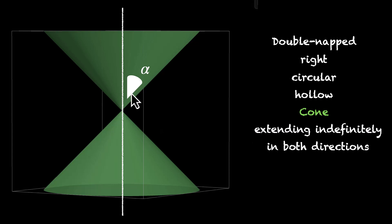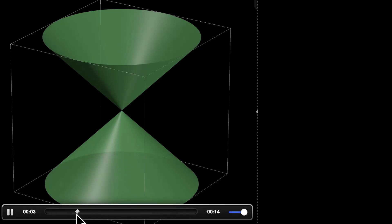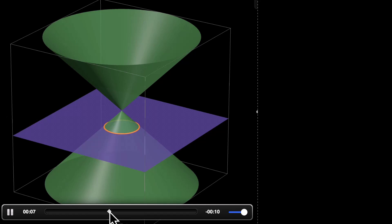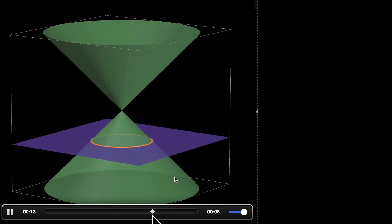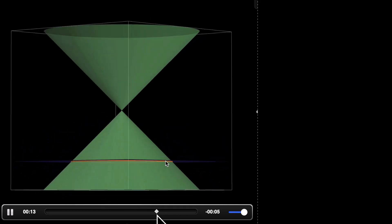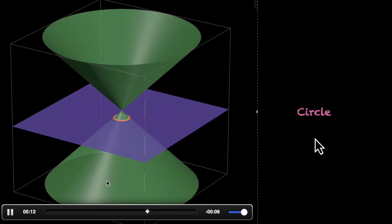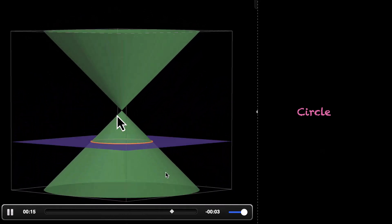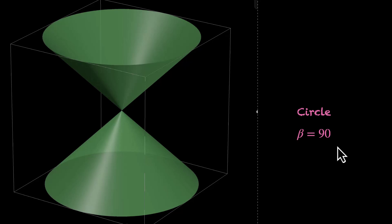Now that we're familiar with the cone, it's time to slice it with planes. So, this is our plane and we slice it. The section that this plane makes with this cone is called a circle. Wherever it cuts, it's a circle. If you measure the angle that this plane makes with the axis — let's call this beta — in this case it's 90 degrees. Whenever the plane cuts this cone at an angle of 90 degrees, we get a circle.